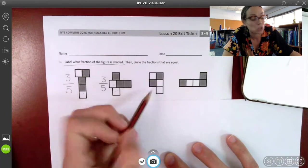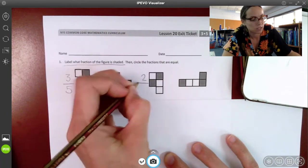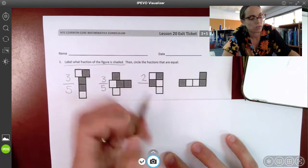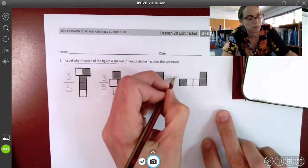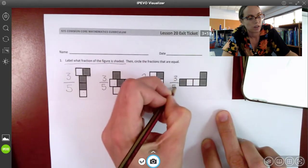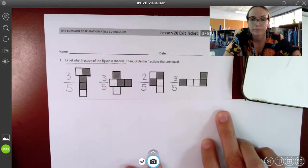Here we see two parts are shaded, and there are one, two, three, four, five parts total. And here we see one, two, three parts shaded, and five parts total.